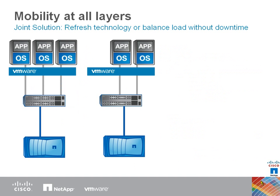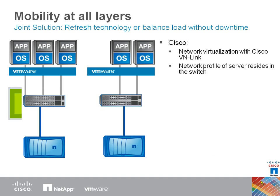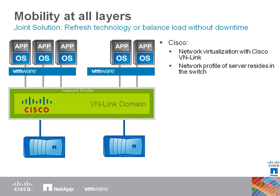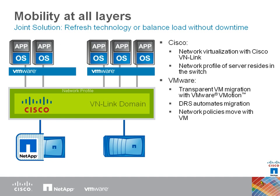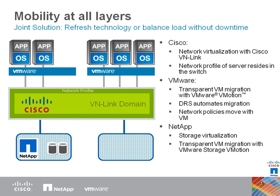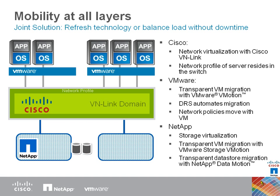To provide for capacity management and load balancing, SMT allows for several types of workload mobility. Cisco VMLink ensures that network profiles roam with the VMs they're attached to. VMware vMotion allows for live migration of VMs. NetApp Storage Virtualization and VMware Storage vMotion means that a similar mobility can be applied to VM data. And finally, with NetApp Data Motion, entire data stores can be moved among physical controllers.